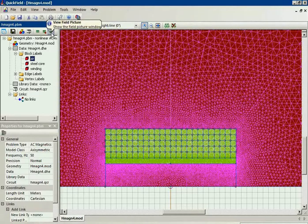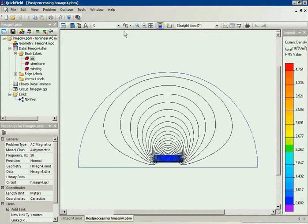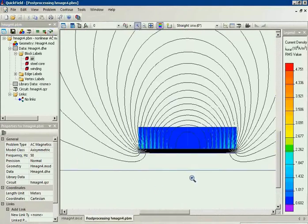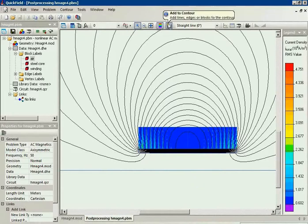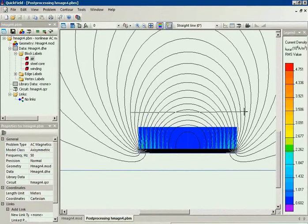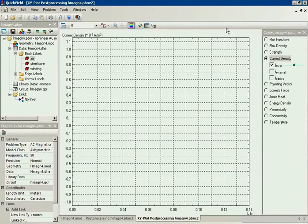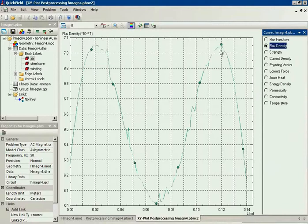Now, let's take a look at the simulation results. Here you can see the field distribution in the coil. In QuickField, when you are analyzing the results, you can build contours and get the field distribution along the contour. Here I build the straight contour. And this is the flux density distribution.